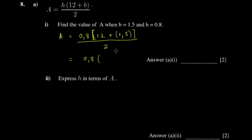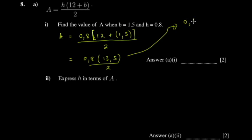This is paper two, so you're allowed to use a calculator, but I advise you to simplify a little first. For example, 12 plus 1.5 is simply 13.5 — you can know that by heart. Divided by 2 gives you 0.4 multiplied by 13.5. Once you're here, just punch it into your calculator and you get 5.4.